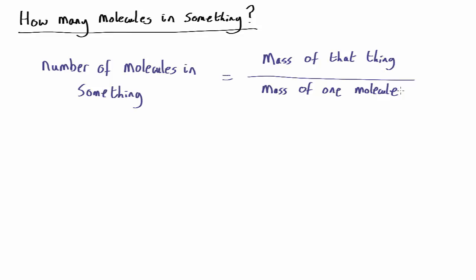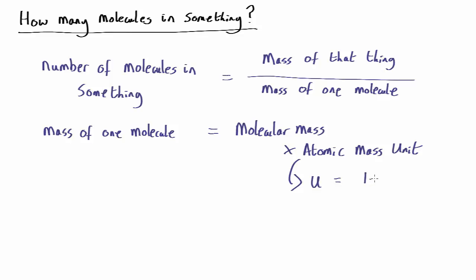So how do you work out what the mass of one molecule is? Well, the mass of a molecule is given by the molecular mass times the atomic mass unit. Now what are these things? We'll come to the molecular mass in a second, but the atomic mass unit is a constant. You can look it up. It's written with the letter U and it has a value of 1.660539 by 10 to the minus 27 kilograms. It's basically the mass of a neutron or a proton.